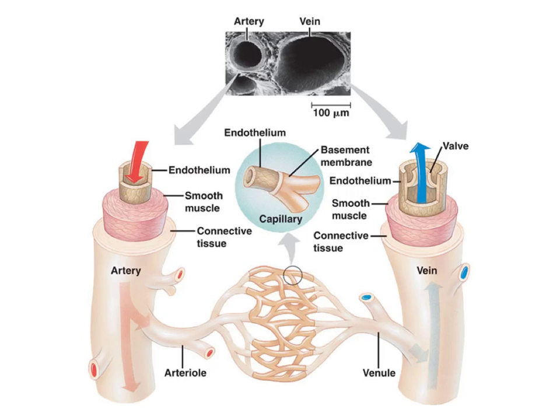There are three parts to the circulatory system. There are the blood vessels that contain blood and move it around. There's the heart that pumps the blood. And then there's the blood itself, and we'll be looking at each of these things separately. But we're going to start by having a look at the blood vessels.